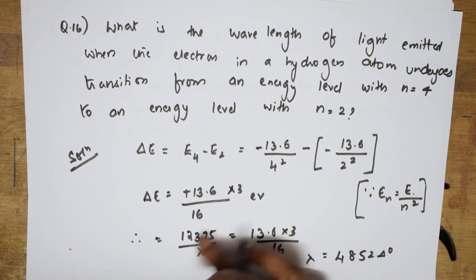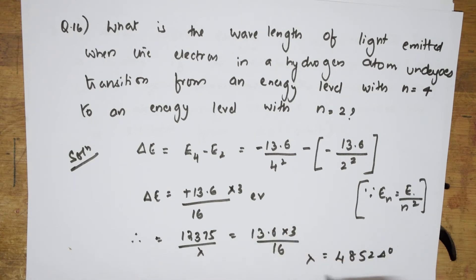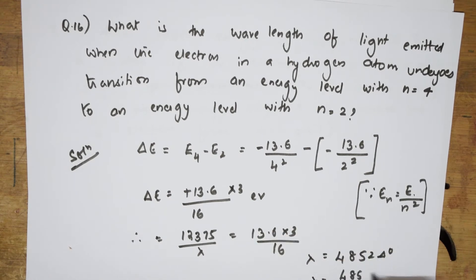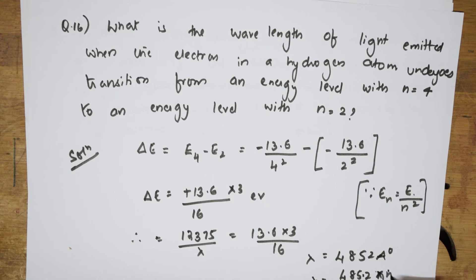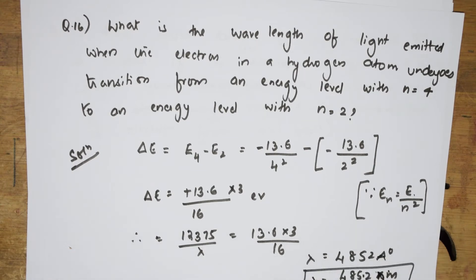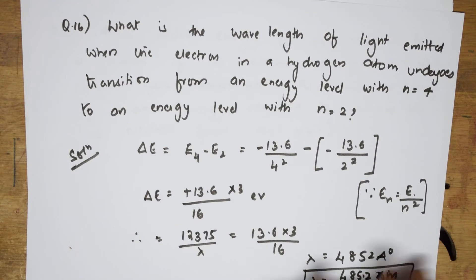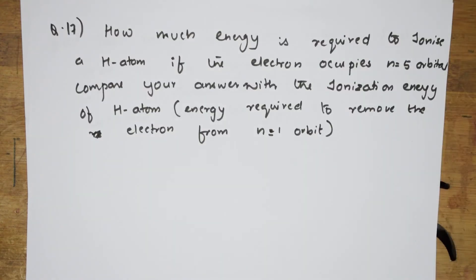When I solve for lambda, multiplying and rearranging, I get 4852 angstroms. Converting to nanometers: since 1 angstrom = 10⁻¹⁰ m, shifting the decimal gives 485.2 nm. I apologize for any earlier confusion — 4852 angstroms is the answer. That is your answer. Now let us come back and do one more numerical from Bahadur chemistry.